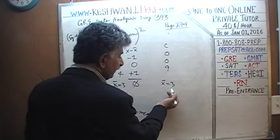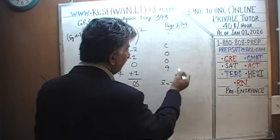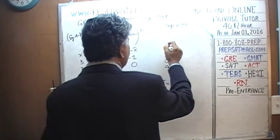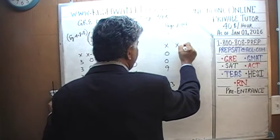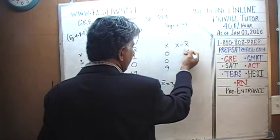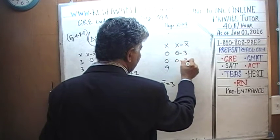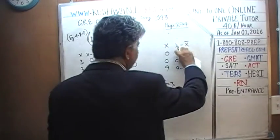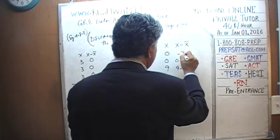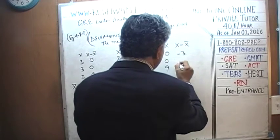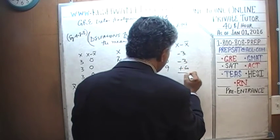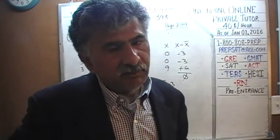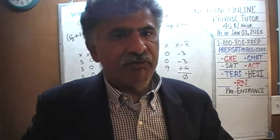Similarly in Town C, the average is 3. Looking at the deviations (x minus x-bar): 0 minus 3 is negative 3, 0 minus 3 is negative 3, and 9 minus 3 is positive 3. Again, the sum of the deviations is 0, which is why we cannot simply add up the deviations — the negative deviations cancel out the positive ones.